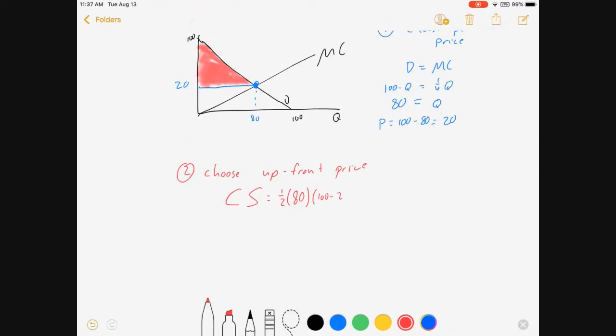Consumer surplus is 1/2 times the base of that triangle, 80 units, times the height of that triangle, 100 minus 20 is also 80. This thing comes out to be 3200. My consumer, if they're paying $20 per unit for 80 units, has $3,200 of excess willingness to pay. If the firm knows that, then they will set their upfront price equal to $3,200.